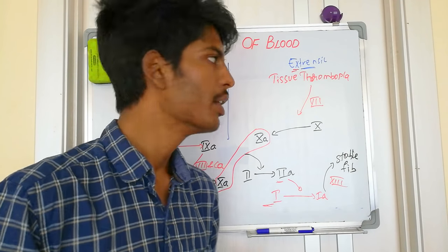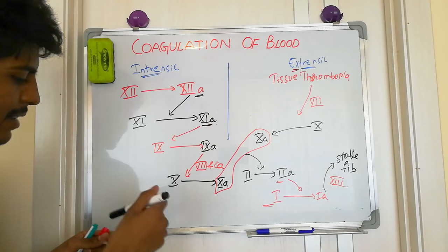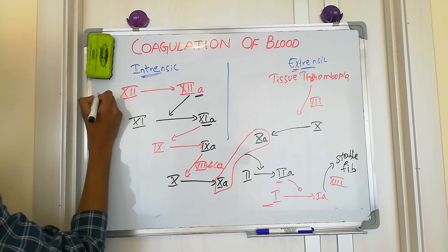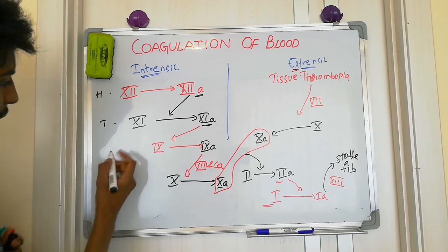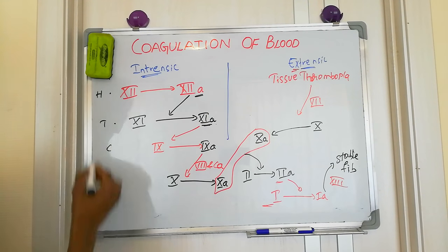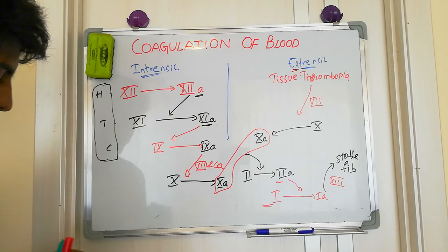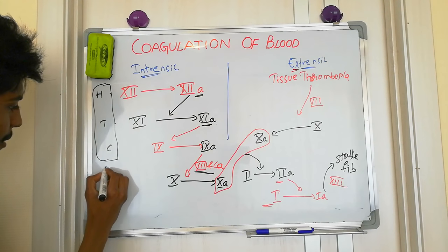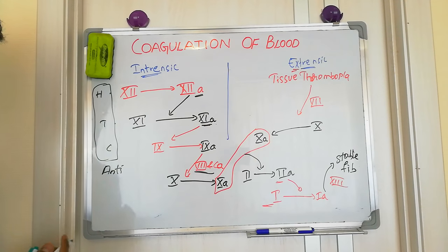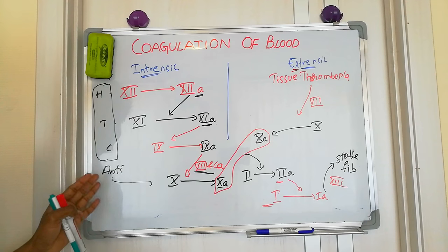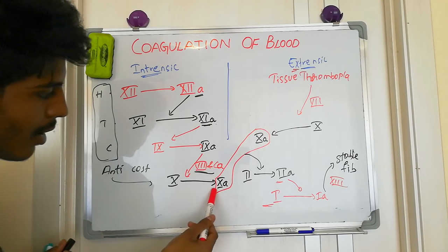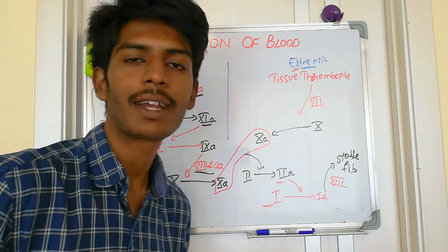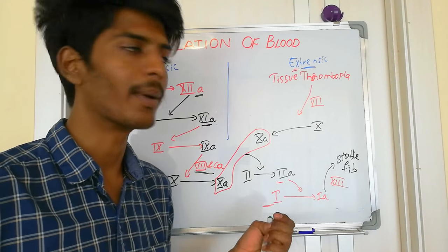To remember the intrinsic pathway: start with factor 12 (Hagman's factor), then factor 11 (plasma thromboplastin), then factor 9 (Christmas factor) — use the mnemonic HTC. After HTC, factor 8 (anti-hemophilic factor) and calcium activate factor 10. For the extrinsic pathway, remember that tissue thromboplastin is factor 3, and 3 plus 7 combine to activate factor 10.